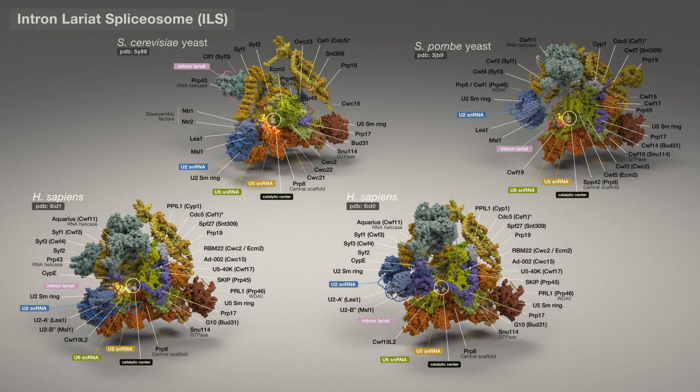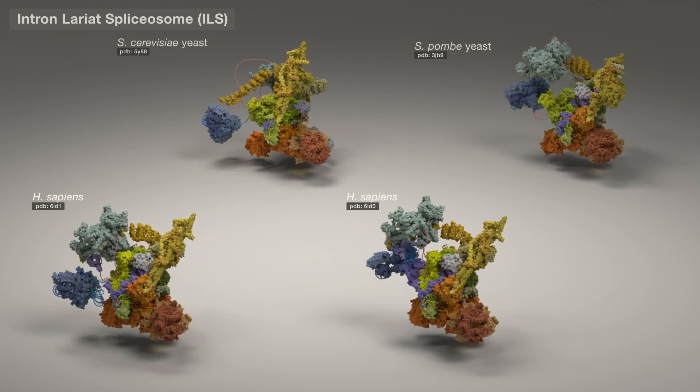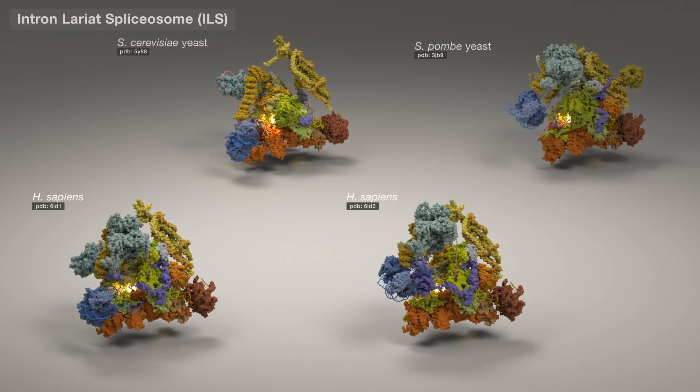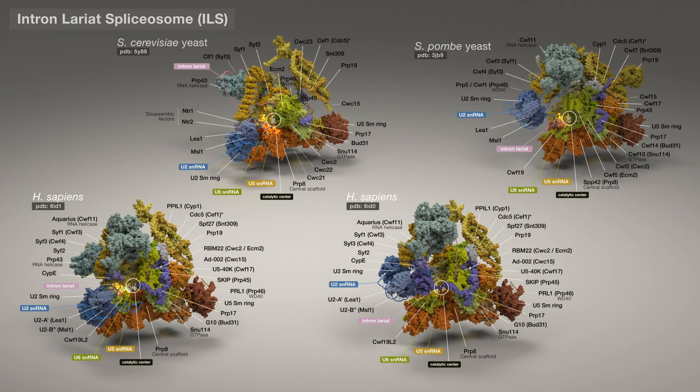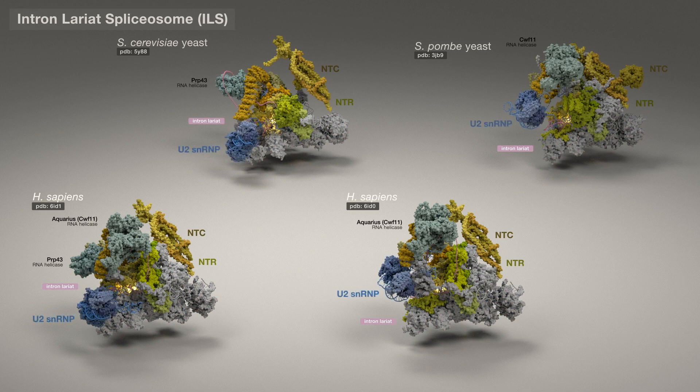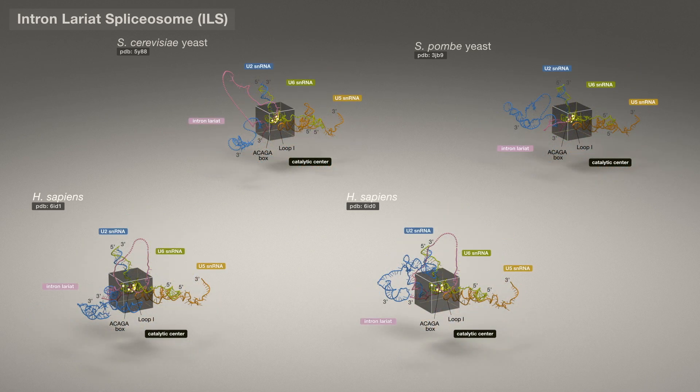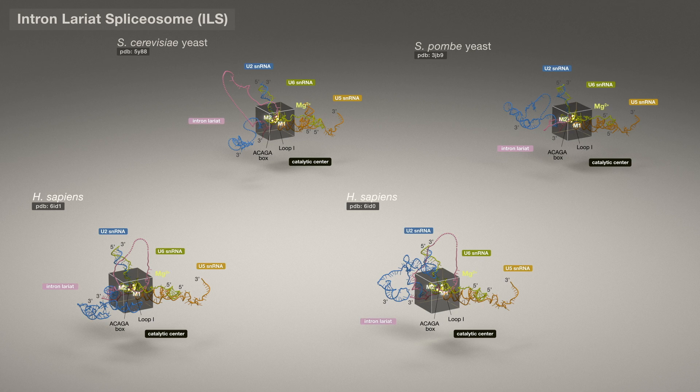Despite vast evolutionary distance, yeast and human spliceosome machinery is decidedly similar in overall molecular morphology and operation. Remarkably, shared overall organizational principles are evident, including molecular interactions between key RNA and protein components, the active site conformation, and the position of catalytic metal ions. Fully comparing structures of yeast and human cycles may soon enable crucial insight.